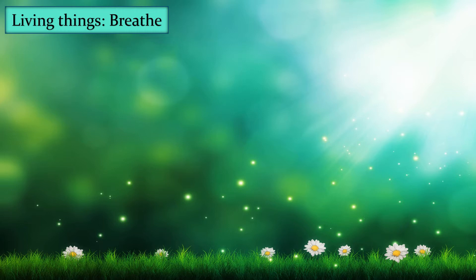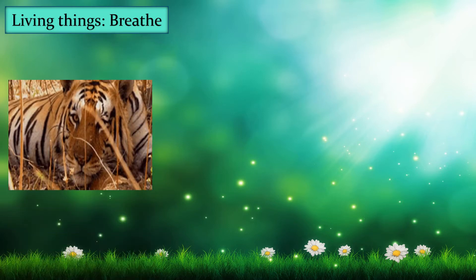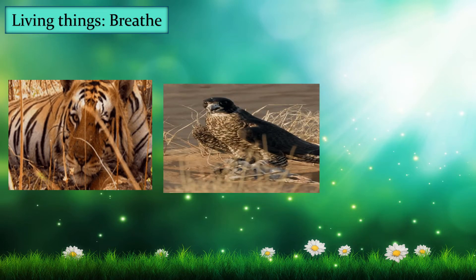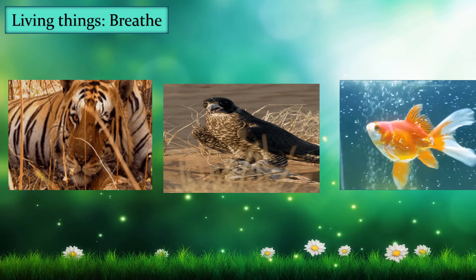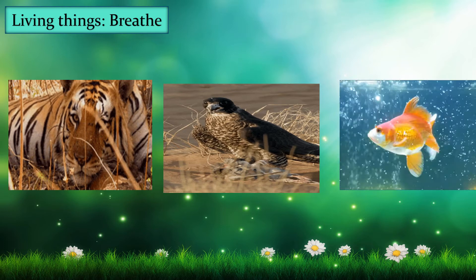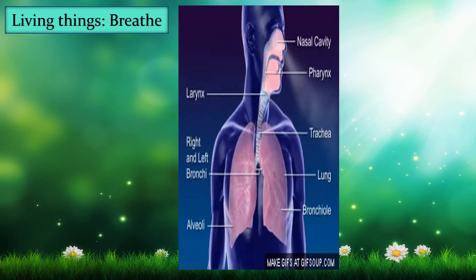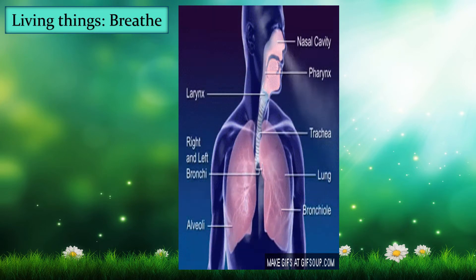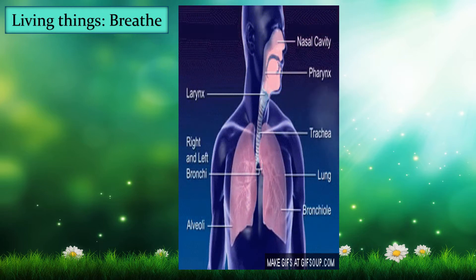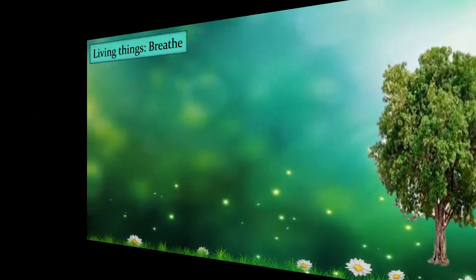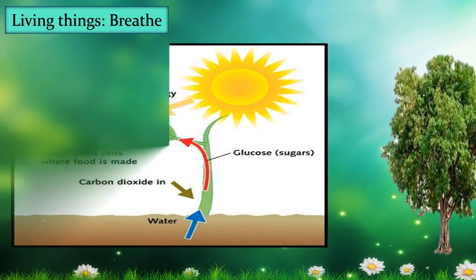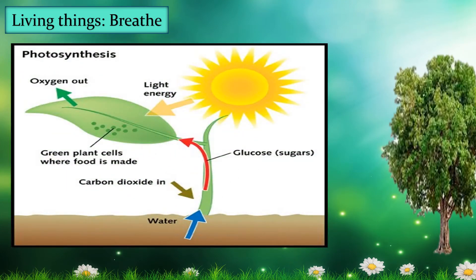Living things can breathe. For example, a tiger breathes through its nose. Birds have small openings on their beaks and they breathe through it. Fish breathe through gills. Human beings breathe through the nose — we breathe in oxygen and breathe out carbon dioxide. Trees breathe through leaves; they breathe in carbon dioxide and give out oxygen.